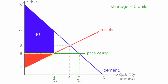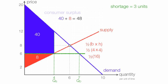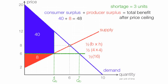Producer surplus becomes the area of the red triangle, which is still the area below the price and above the supply curve. It's one half times 4 times 4, since 6 minus 2 equals 4. So producer surplus becomes one half times 16, which equates to 8. Total benefit is 40 plus 8 which equals 48, and this is after the price ceiling.